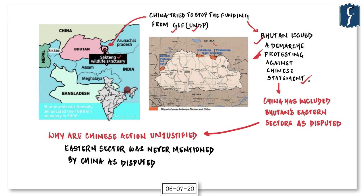As a reaction, China included the eastern sector of Bhutan and the corresponding border as a disputed territory, claiming it has never settled its boundary with Bhutan. However, official records of both countries suggest otherwise — China and Bhutan have held 24 rounds of boundary talks between 1984 and 2016. Not a single time did China raise the issue of non-demarcation of the eastern sector.